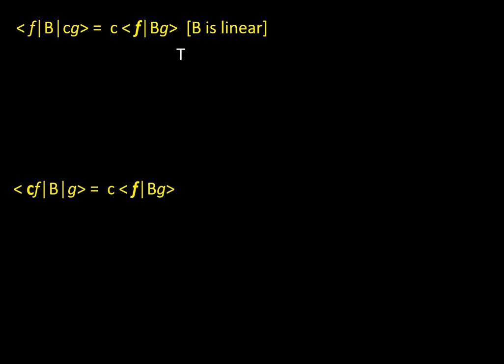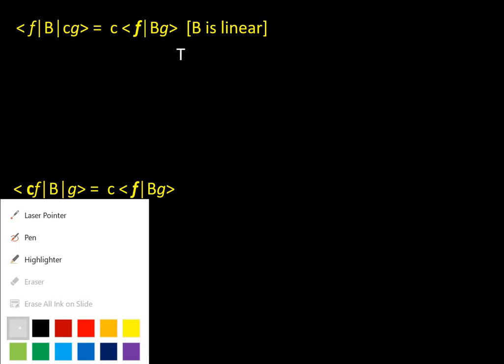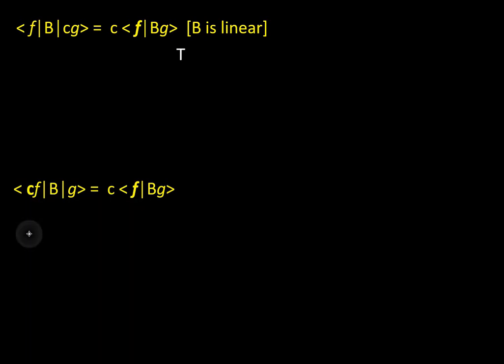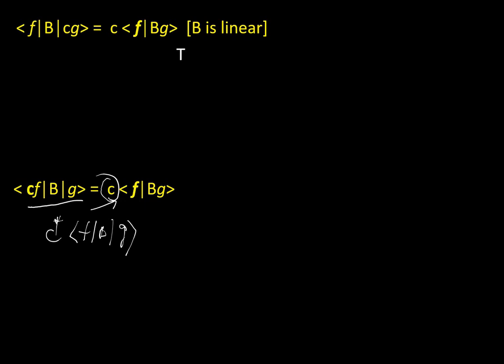Next question: ⟨cf|B|g⟩ = c·⟨f|B|g⟩. Here c is in the bra position. If it comes out, it would come as c*, not c. So c* should come out, giving c*·⟨f|B|g⟩. But the answer given is c, not c*. So the statement is FALSE — it should be c*.